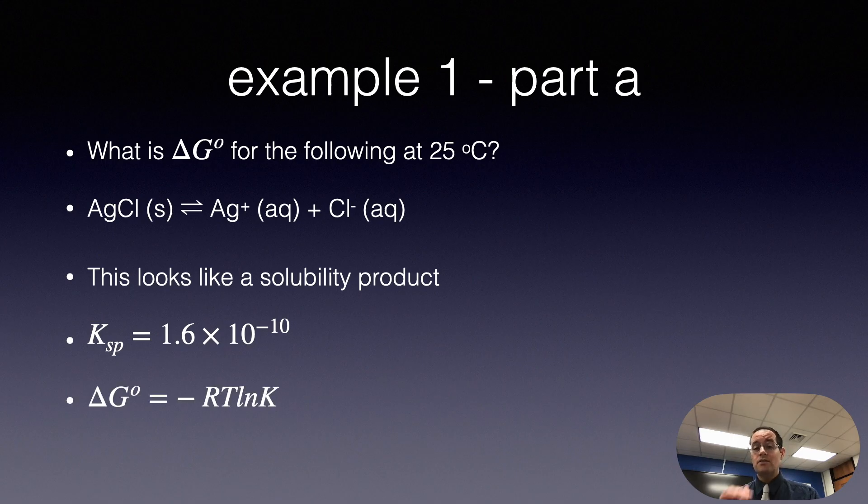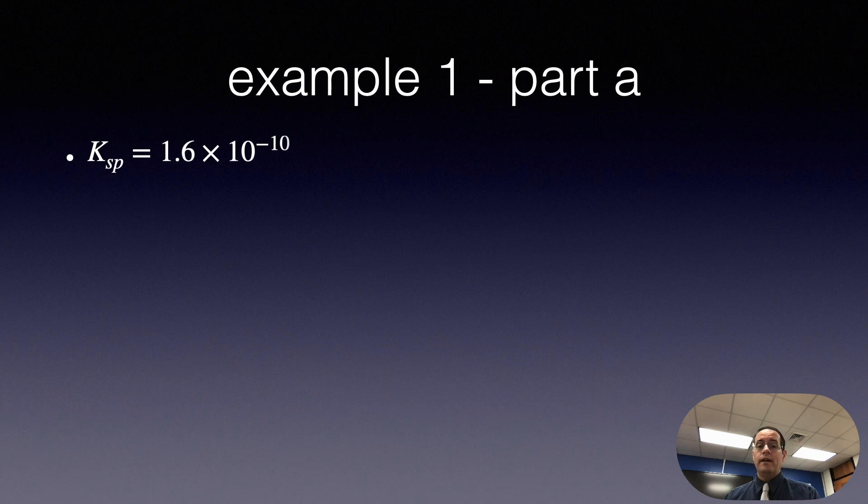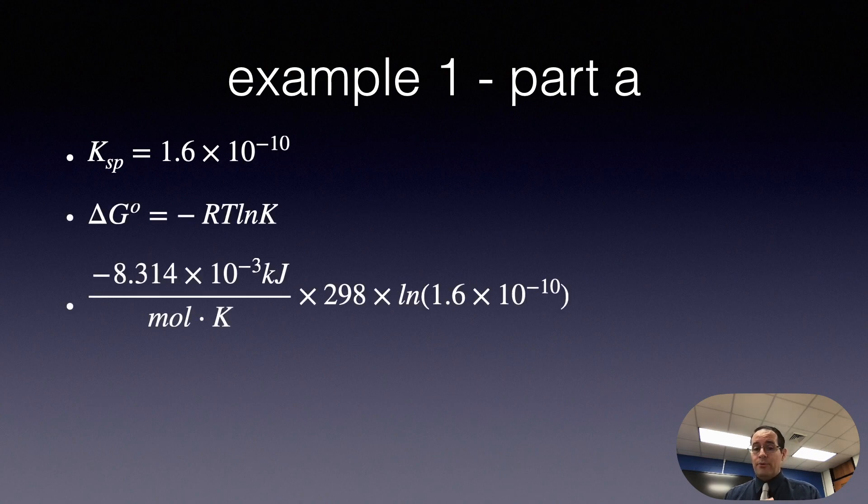Now, what we can do here is just slap it into this formula we derived. ΔG° is equal to minus RT ln K. And so we go ahead and do that. So R, remember, is 8.314 joules per mole per kelvin. But since I want that to be in kilojoules, I divide by 1,000. Make sure you use the minus sign in your formula. And when you have the equilibrium constant, make sure you take the natural log of that equilibrium constant.